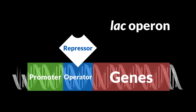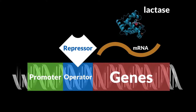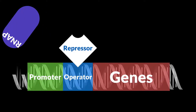In the lac operon, the repressor is bound to the operator so that RNA polymerase will not bind to the promoter region. A lot of the foods that people eat contain a complex sugar called lactose, and lactose is pretty difficult to break down. E. coli has a protein called lactase that will be used to break down lactose. The genes in the lac operon code for lactase, which will break down lactose whenever E. coli comes across any lactose. These genes will be turned into mRNA, and that mRNA will be turned into lactase. But RNA polymerase cannot bind to the genes because the repressor is bound to the operator, so no lactase can be created.